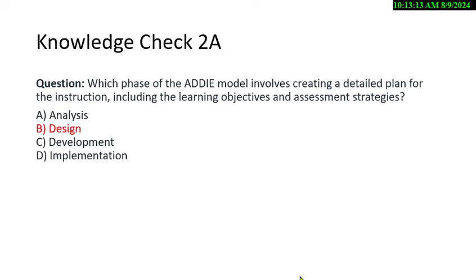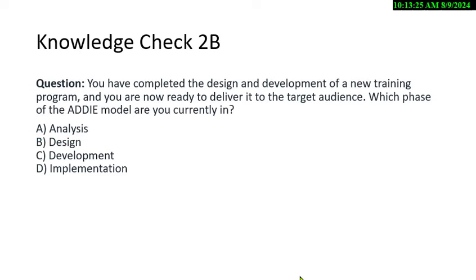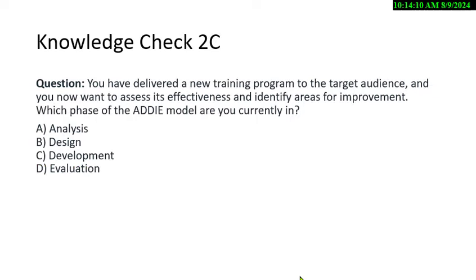You just can't read the model overview and expect to remember it — you'll need time to think through each step. Next question: You've completed the design and development of a new training program and are now ready to deliver it. Which phase are you in? The answer is Implementation — you're going in to deliver it. Another: You've delivered the training and want to assess its effectiveness and identify areas of improvement. Which phase? Evaluation.